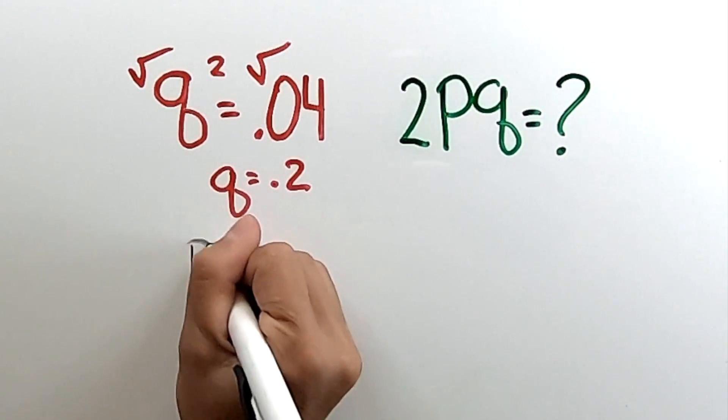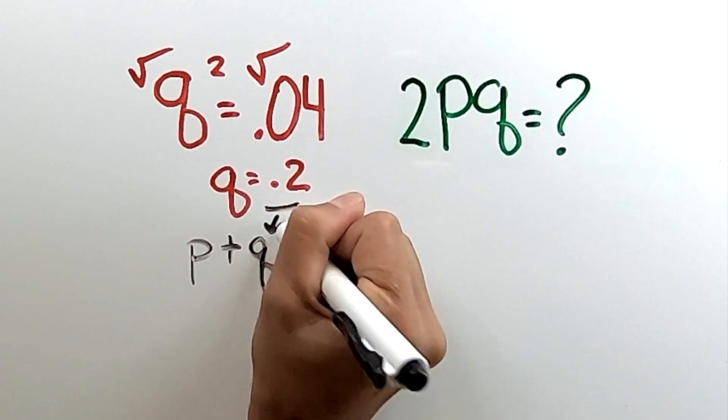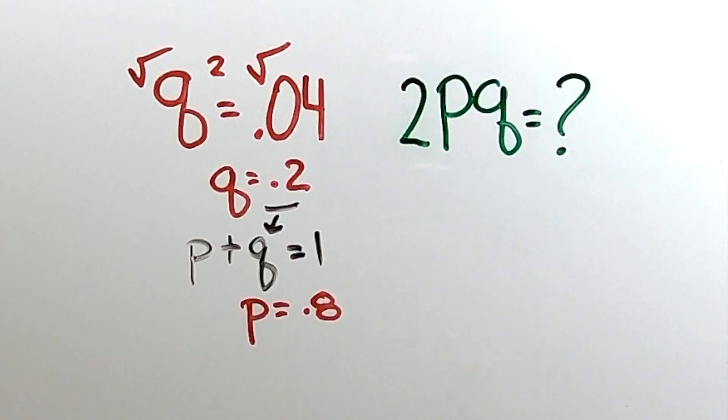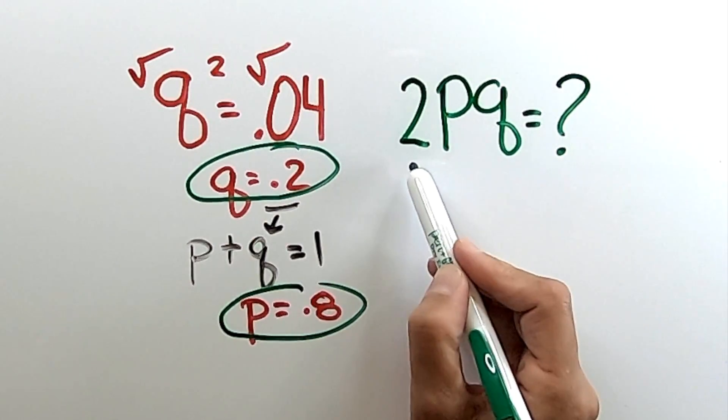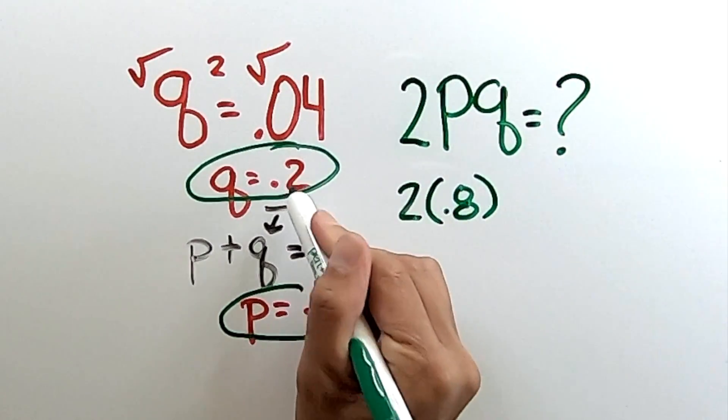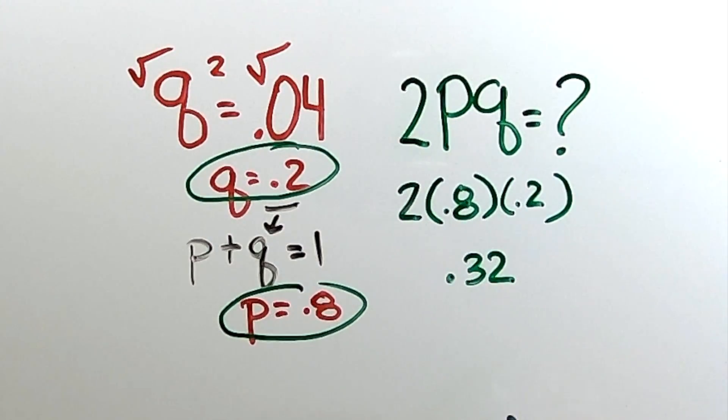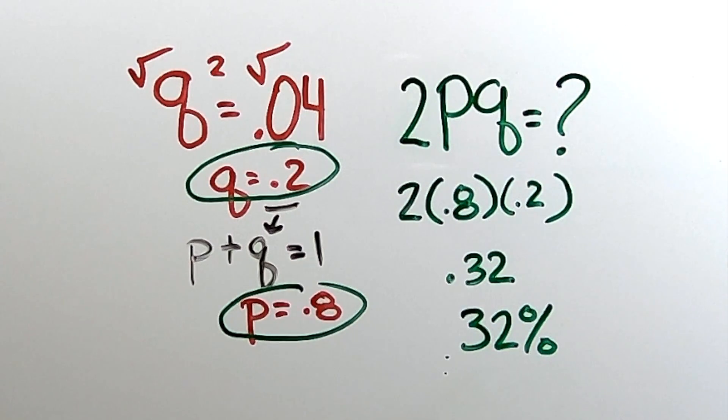So then let's use our p + q = 1 formula, plugging in the 0.2 for the q, and solving for p. p will equal 0.8. So now we have p, and we have q, and we're looking for 2pq, which is 2 times p times q. So I'll do 2 times 0.8 times 0.2 to get 0.32, which is the frequency of carriers in this family, which is 32% carriers. Simple as that.